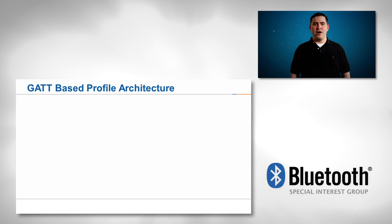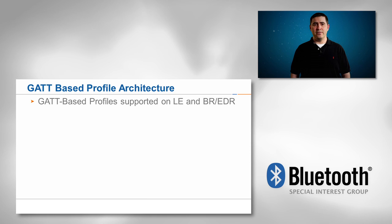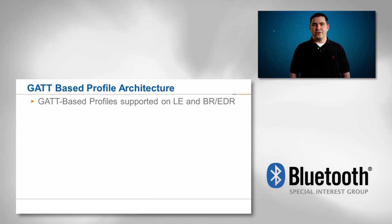Generic Attribute Profile, also known as GATT, is a Bluetooth SIG core profile that defines a common structure of data used by application profiles built on top of the GATT profile. GATT uses the Attribute Protocol for all data operations and defines higher level procedures used to access the data on the server.